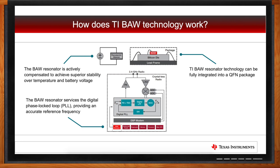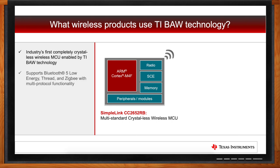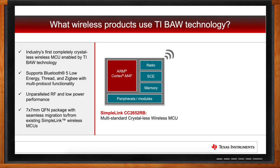Where would you find BAW today? We have a product called the SimpleLink CC2652RB — a multi-standard wireless MCU. It's actually the industry's first and only completely crystal-less wireless MCU enabled by TI BAW technology. On this device you can do Bluetooth Low Energy, Thread, Zigbee, or multi-protocol applications without any external crystals. The device also has unparalleled RF performance and low-power performance inside a 7x7 QFN package, which is quite small given that the BAW resonator circuit is integrated as well.